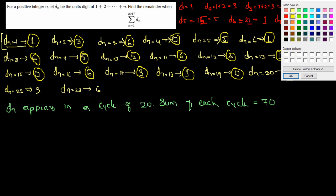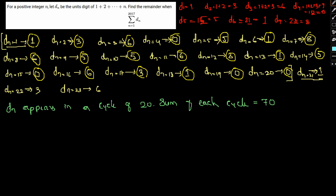Now what we have is we have 2017. How many cycles will we have? We will actually have 100 cycles. So 100 cycles, if we take the sum of each one of them, the sum would simply be 7,000. I hope this was clear.